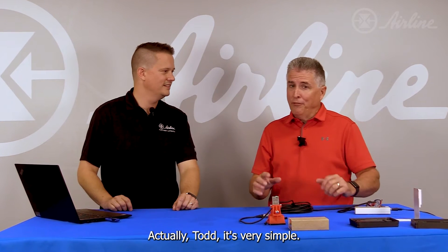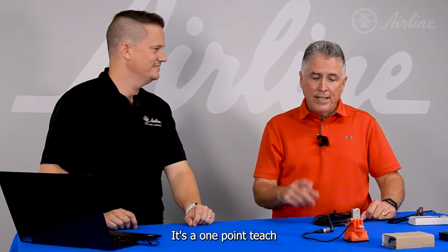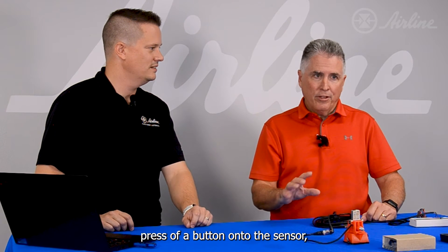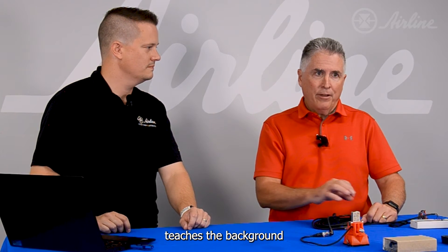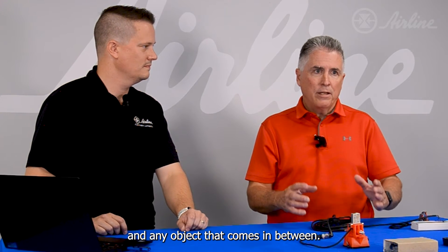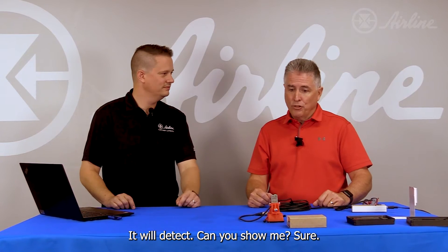So Mike, this sensor must be incredibly complicated to program, right? Actually Todd, it's very simple - it's a one-point teach, press of a button onto the sensor, teaches the background, and any object that comes in between it will detect. Can you show me? Sure.